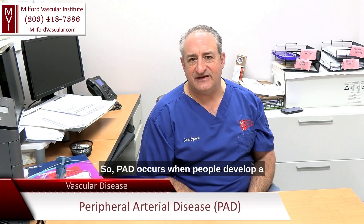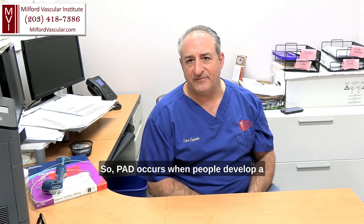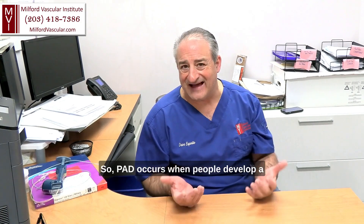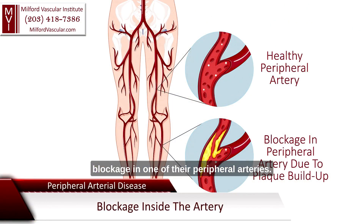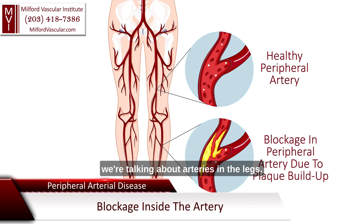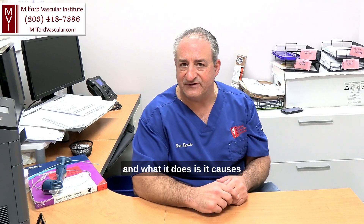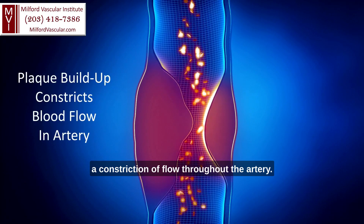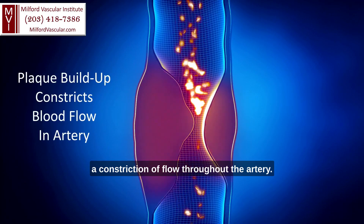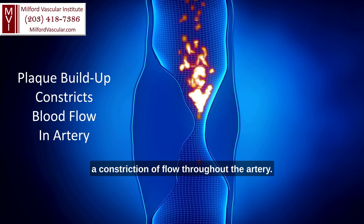PAD occurs when people develop a blockage in one of the peripheral arteries. Typically when we talk about peripheral arteries, we're talking about arteries in the legs, and that buildup comes from plaque. Plaque can build up in the arteries and causes a constriction of flow throughout the artery.